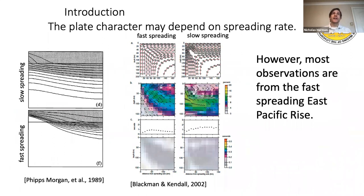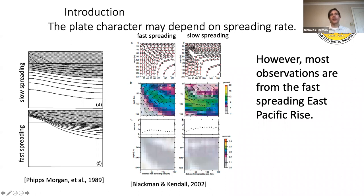Another important factor is the spreading rate dependence of the nature of the lithosphere-asthenosphere boundary. Work by Jason Morgan from the 1980s suggested that slow spreading systems would typically have a thicker lithosphere at earlier ages because lateral conductive cooling is important at slow spreading, whereas at fast spreading we might have something more like the half-space cooling model with a thinner lithosphere beneath the ridge. There are also predictions for seismic anisotropy — the behavior of deformation of olivine may be different between fast and slow spreading ridges.